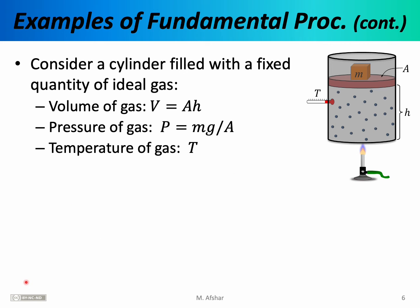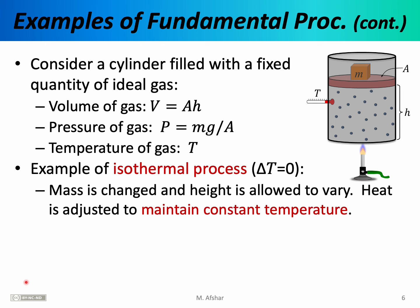We can use the same setup to discuss an isothermal process — one in which the temperature does not change. Imagine a process in which the mass is changed and the height is allowed to vary, but at the same time, the heat is adjusted to maintain the temperature at a constant value. More specifically, imagine that you stack more masses on the piston. As you increase the mass, you're basically changing the pressure of the gas. The added masses will push the piston down, thereby compressing the gas.